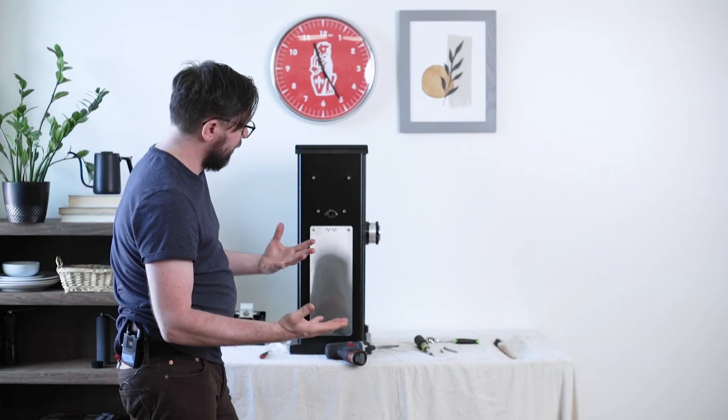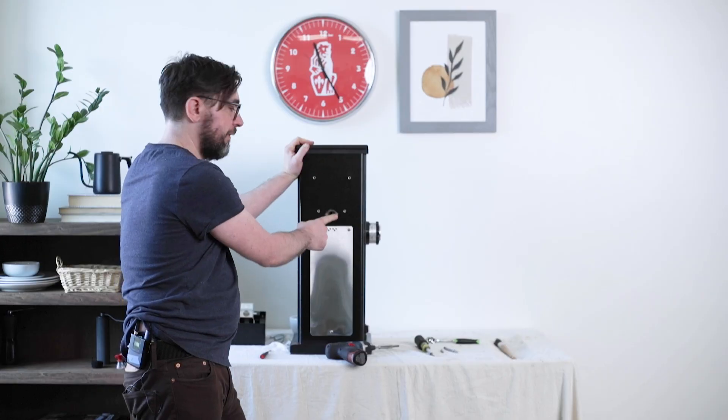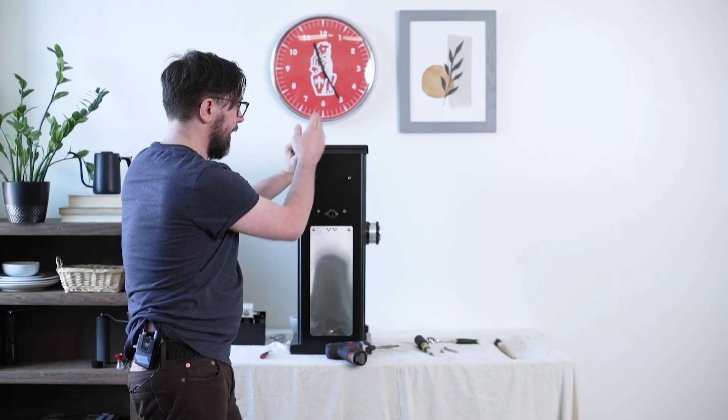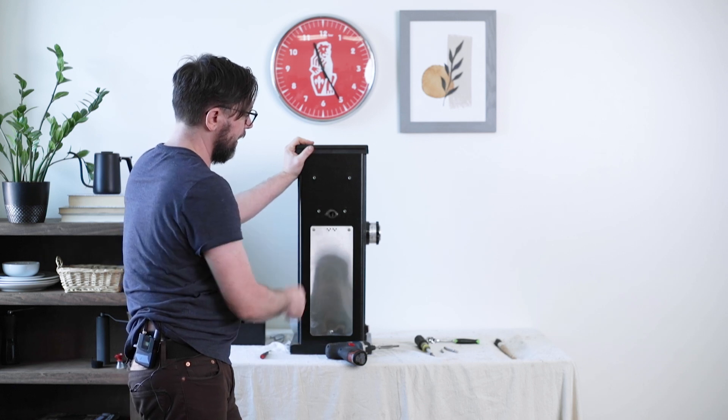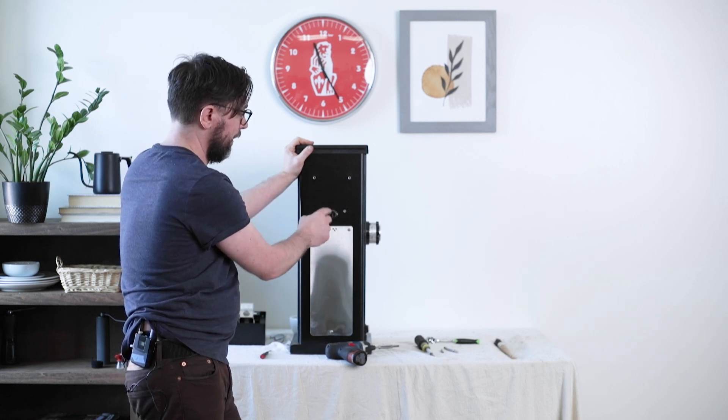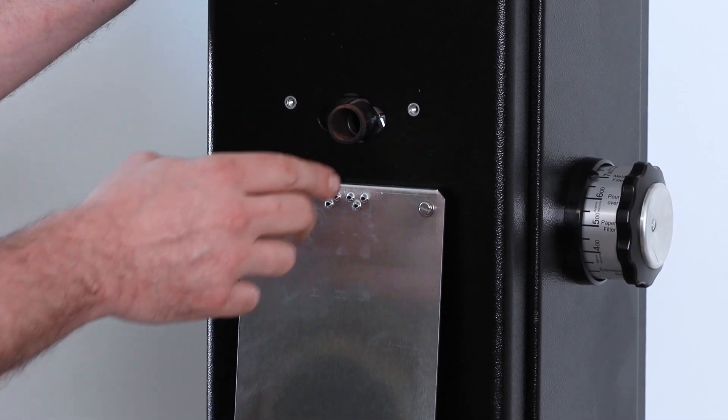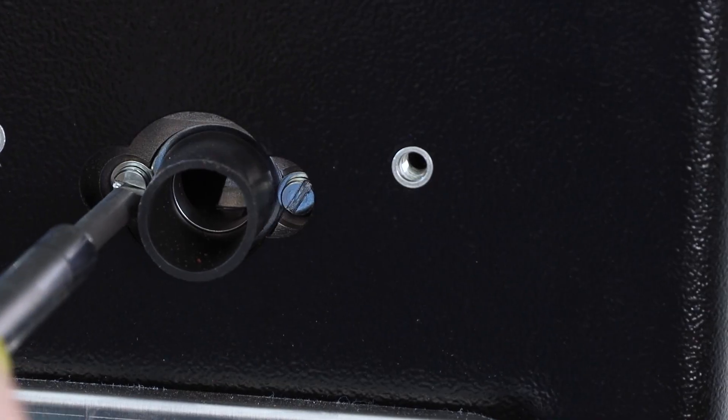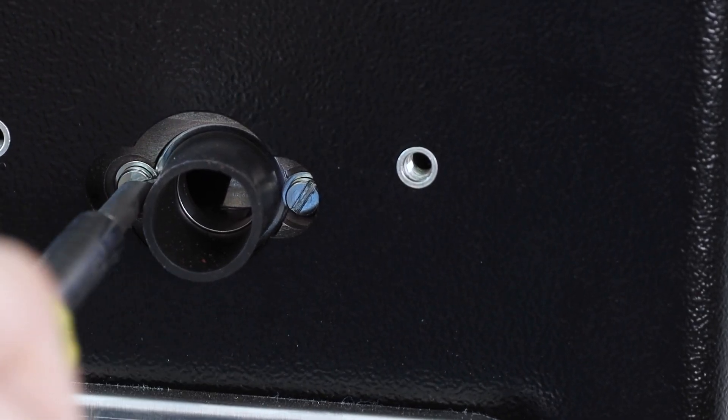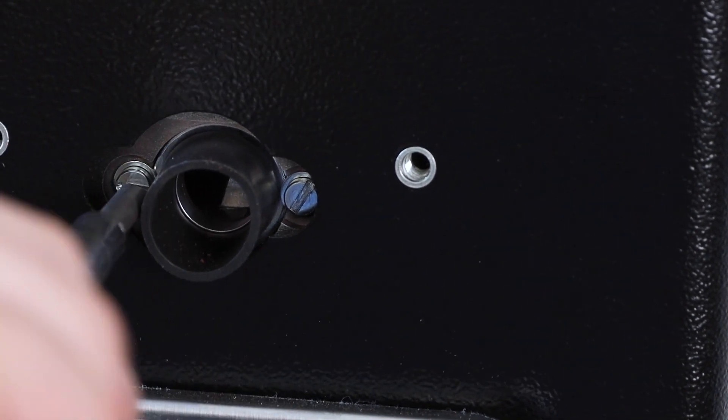So now that we've removed the discharge housing, we can take a closer look at the transition tube. If you watched the earlier video about cleaning the grind chamber, we looked at this tube to make sure it wasn't cracked, torn, or deformed. We're doing that here, but in this situation, we're going to act as if we need to replace this. You can remove these two flathead screws to the side and replace the rubber tube and washers that come with that part.